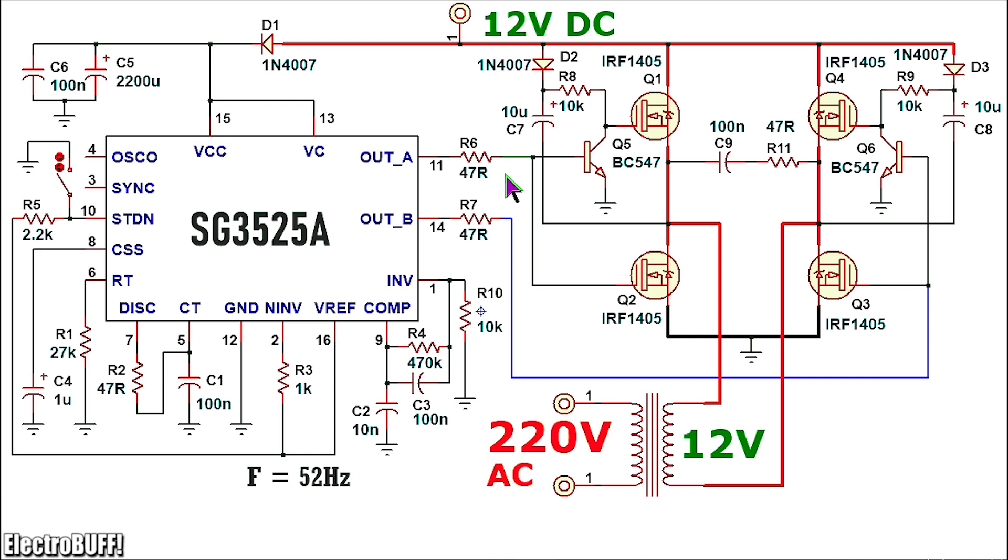For the MOSFETs, you can use IRF1405, they are high current power MOSFETs and they should give you more than 600W with 12V.